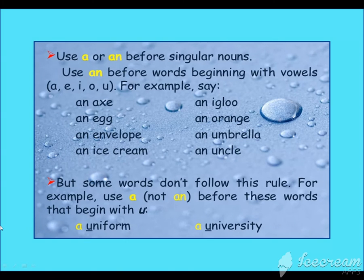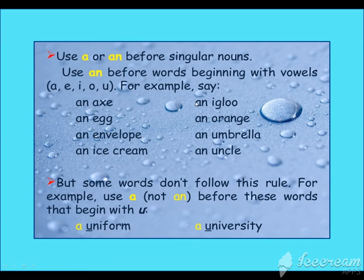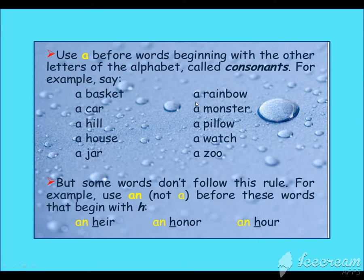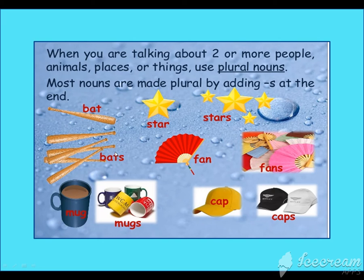But some words do not follow this rule. For example, use 'a' not 'an' before words like 'uniform' and 'university.' Now let's discuss singular and plural. When there is one bat, we say 'bat.' When there are more, we say 'bats' — we add 's.' So 'bat' is singular and 'bats' is plural.